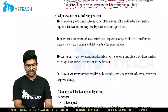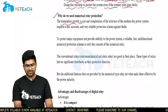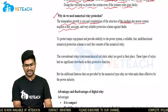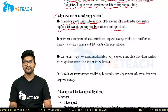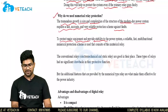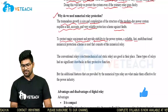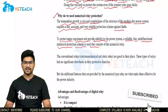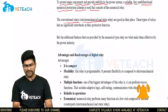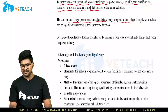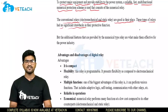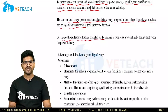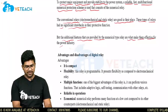Why do we need numerical relay protection? The tremendous growth in size and complexity of modern day power systems requires fast, accurate, and very reliable protection schemes against faults. To protect major equipment and provide stability to the power system, a reliable, fast, multifunctional numerical protection scheme is used that consists of a numerical relay. The conventional relays — electromechanical and static — are good in their place and have no significant drawbacks in their protective functions. But the additional features provided by numerical type relays are what make them effective for the power industry.